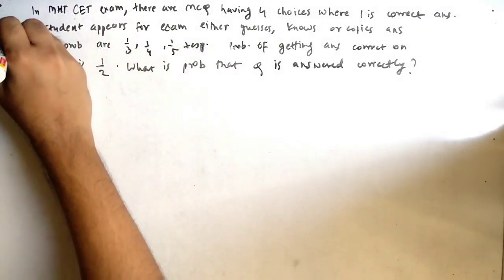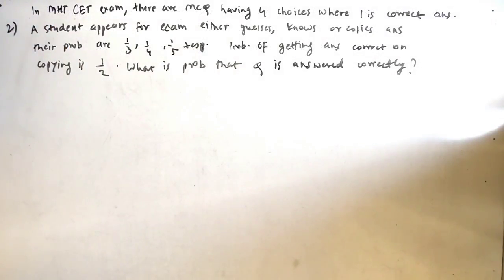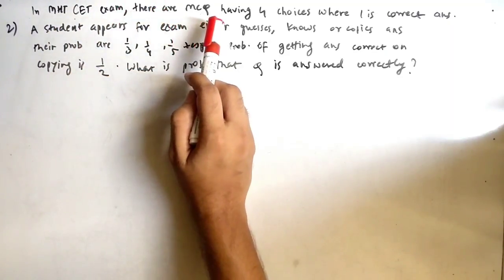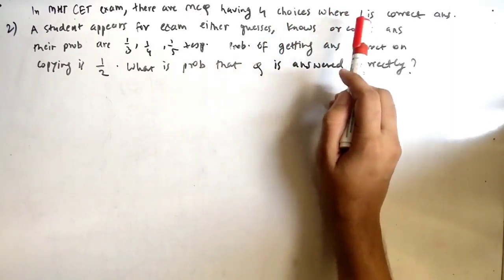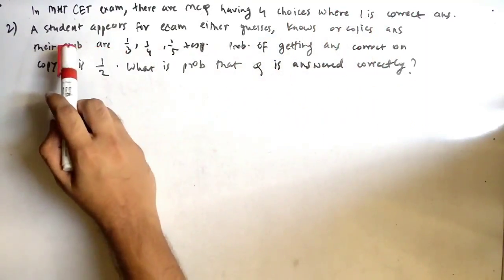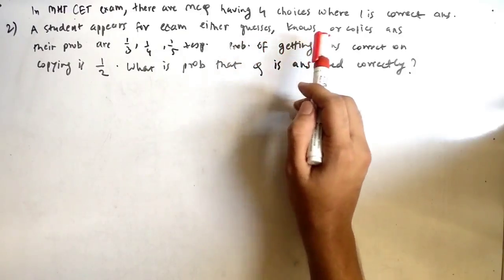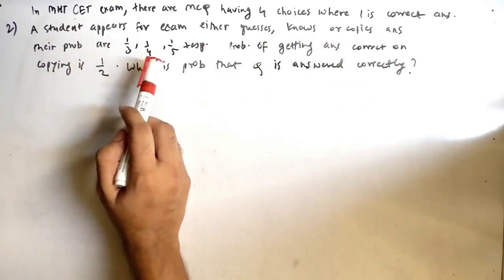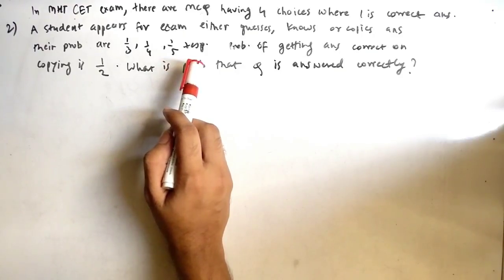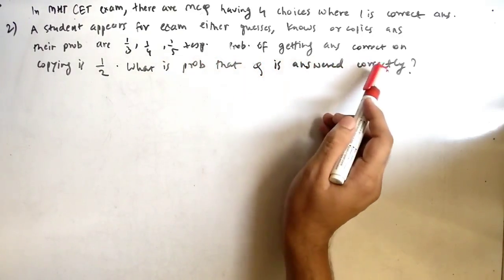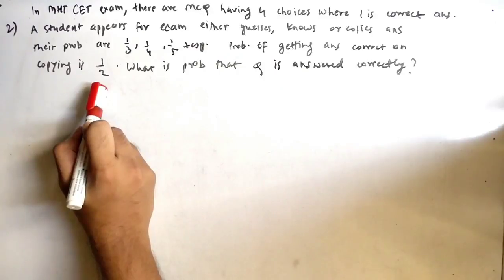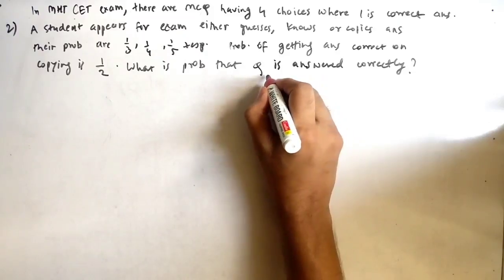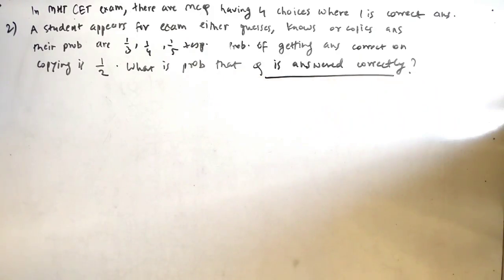Our second question: In an MHT-CET exam, there are MCQ questions having four choices where one is correct. A student either guesses, knows, or copies the answer, with probabilities 1/3, 1/4, and 1/5 respectively. The probability of getting the answer correct by copying is 1/2. Find the probability that the question is answered correctly.